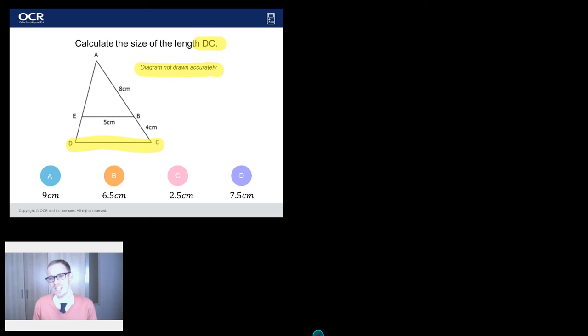Right so the reason I think this question is causing problems is it's not entirely obvious what topic of maths it's on. I've got triangles there so is it trigonometry? Is it Pythagoras? What's going on here? In fact no. It's actually a question all about similar shapes.